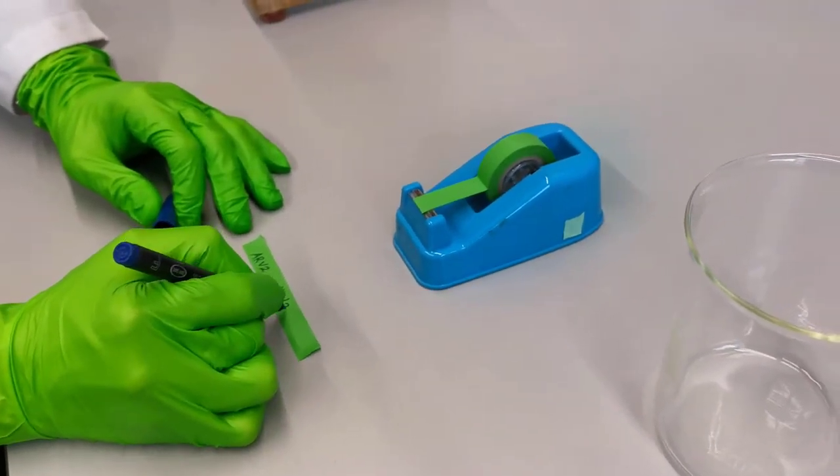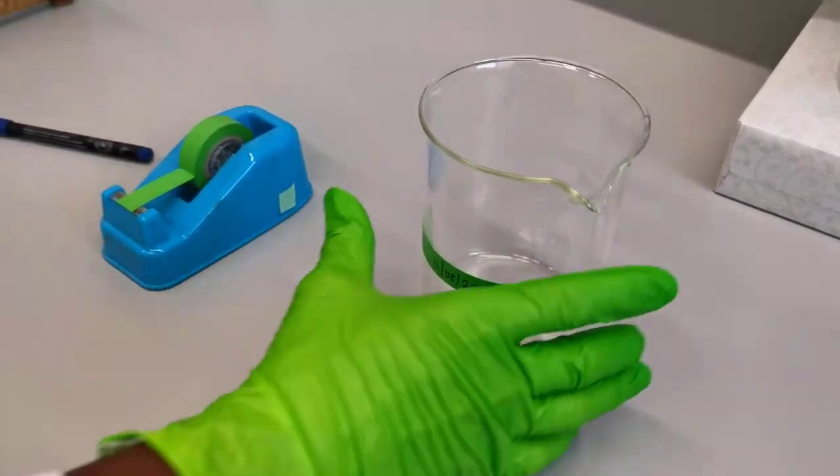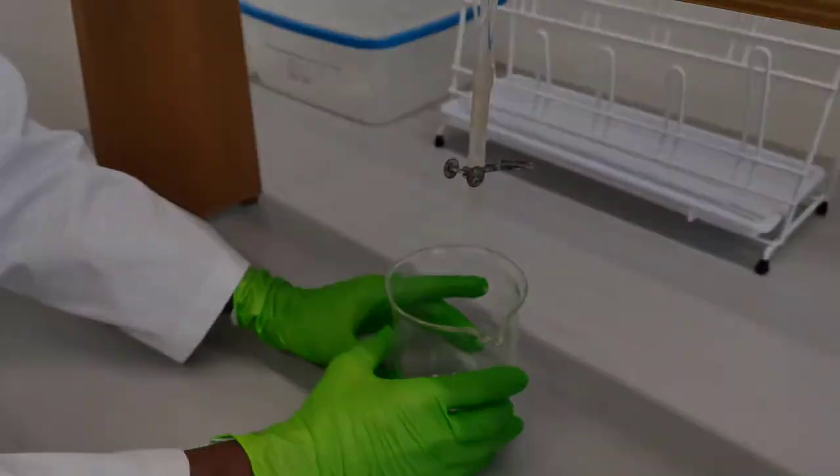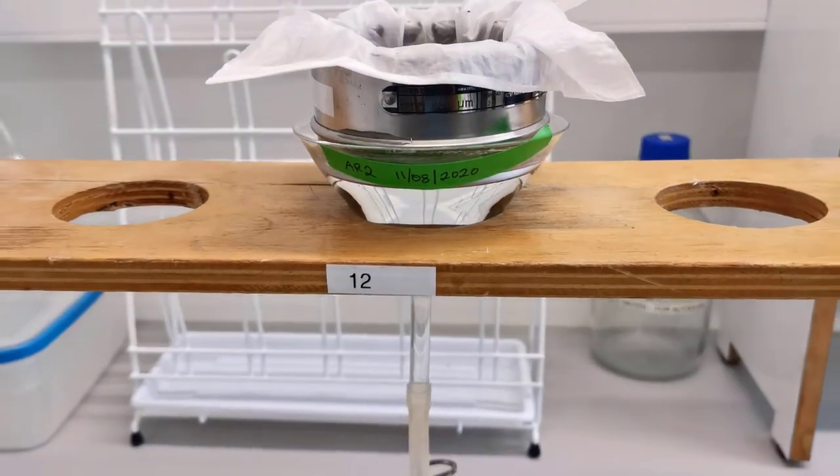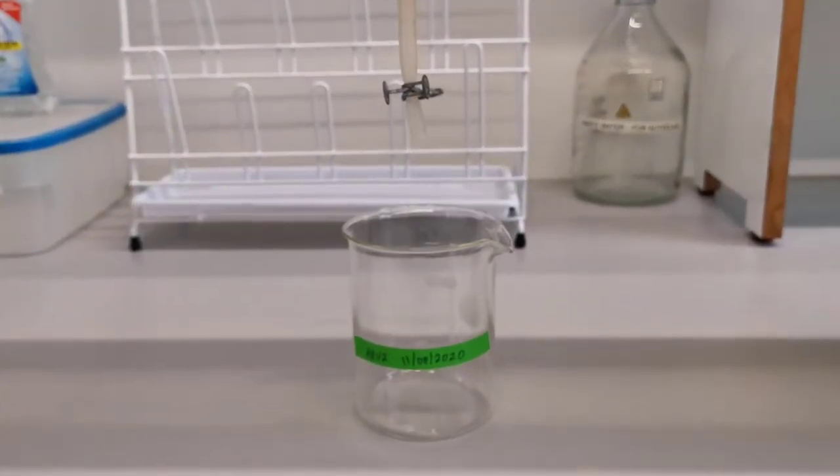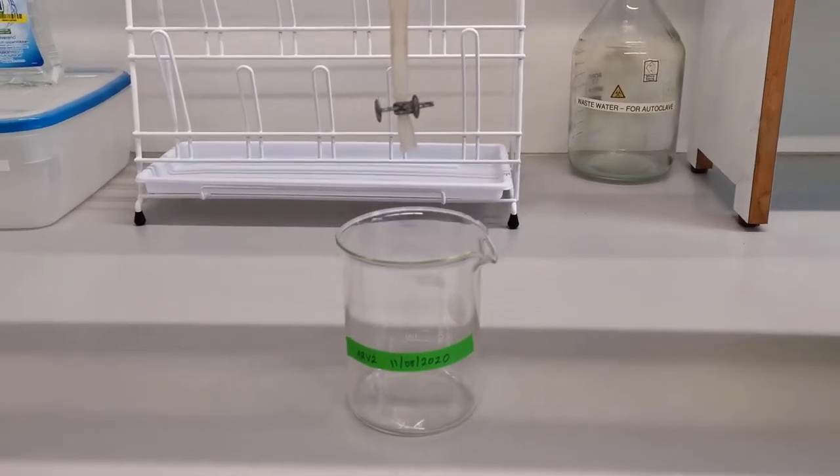You will also prepare a collecting beaker well labeled as in the case of the funnel. This is the final extraction setup which will be left at room temperature for at least 24 hours, during which motile nematodes from the sample will move into the water and collect at the bottom of the tube.